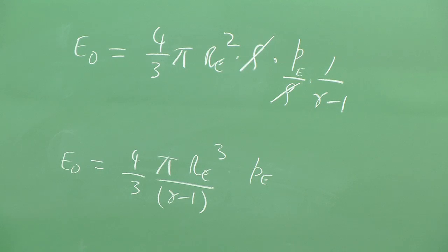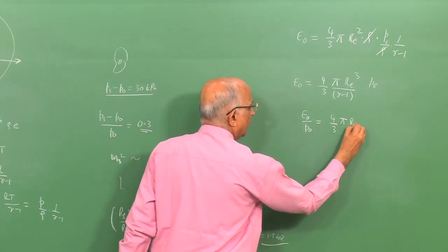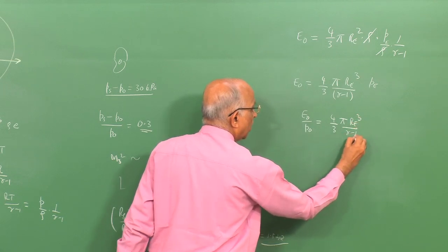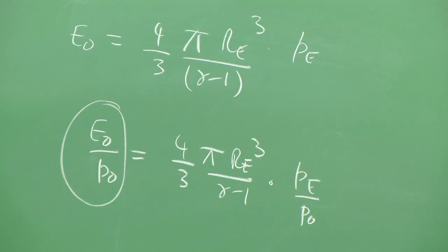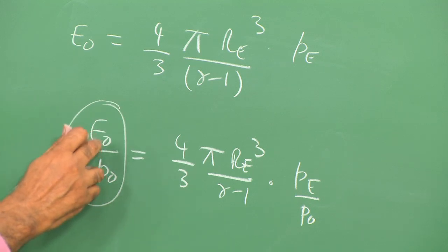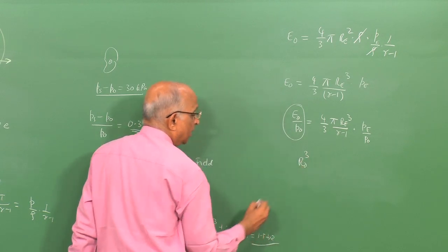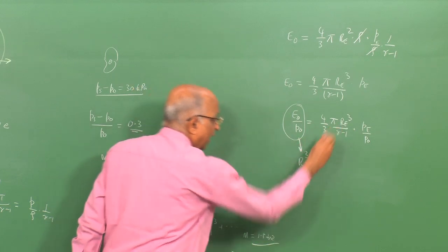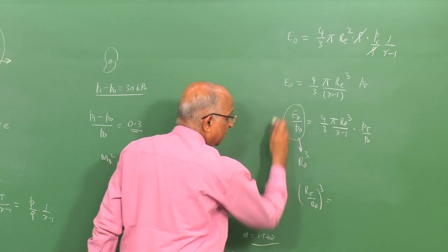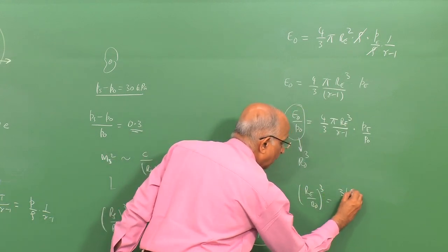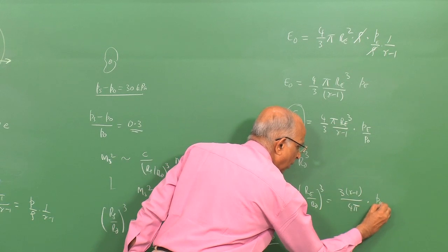We get E0 = (4/3)·pi·Re³ · Pe/(gamma-1), where Pe is the pressure of the explosion. Dividing both sides by P0 and using the definition E0/P0 = R0³, we obtain (Re/R0)³ = [3·(gamma-1)/(4·pi)] · (P0/Pe).